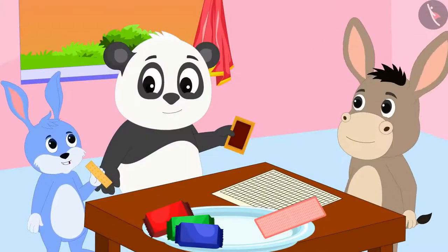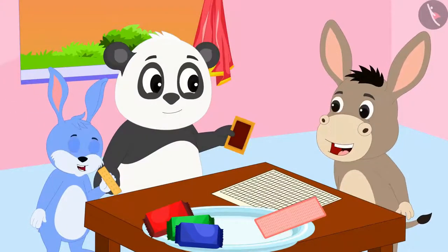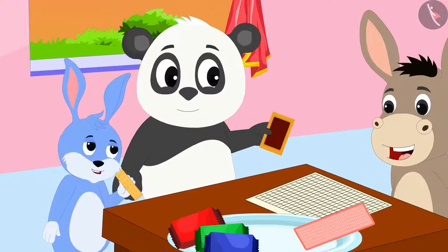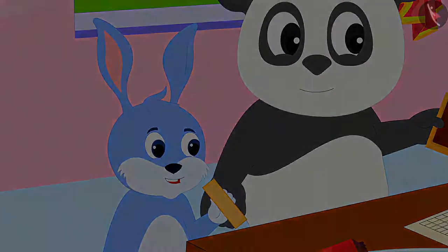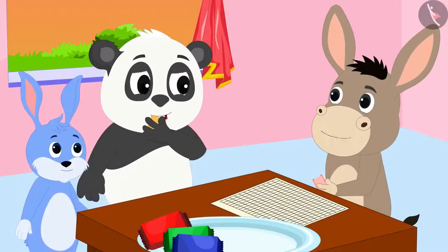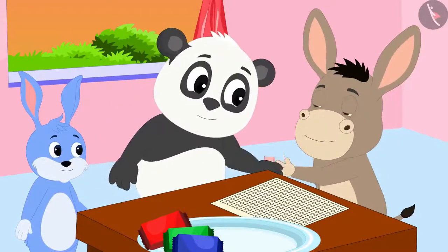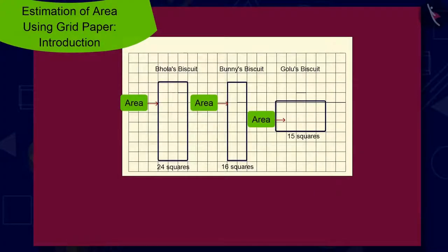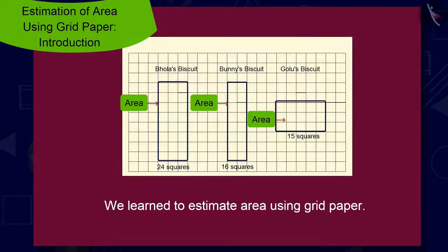This is such an interesting thing you have taught us, Bhoola. Let us all share our biscuits and eat them, then Bunni said to Bhoola. The three friends shared their biscuits and ate them with great pleasure. Children, in this video we learned to estimate area using grid paper. In the next video, we will learn more about it through some interesting examples.